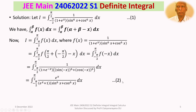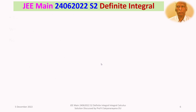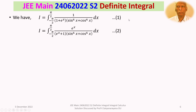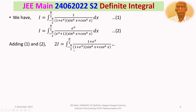We have equation 1 and equation 2. We now add them. Adding gives I + I = 2I, and the integral from −π/2 to +π/2 has numerators 1 and eˣ over the common denominator (1 + eˣ). So 2I equals the integral from −π/2 to +π/2 of (1 + eˣ) divided by (1 + eˣ)(sin⁶x + cos⁶x) dx.